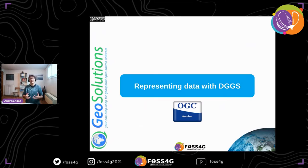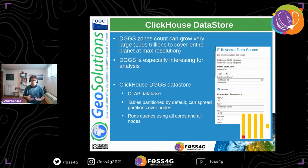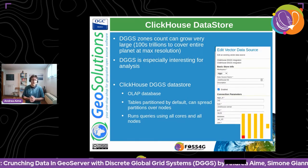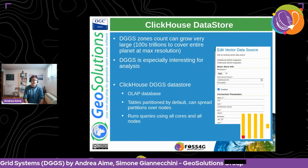Now that I had a better understanding of the geometric structure of DGGSs, I started working on representing data with DGGSs. Representing data with DGGSs means that instead of encoding a geometry, you encode the location of your information using zone identifiers. Splitting by powers of nine or powers of seven, the number of zones can grow very, very large, especially at high resolutions — it's not difficult to end up with hundreds of trillions of zones covering the entire planet at maximum resolution.